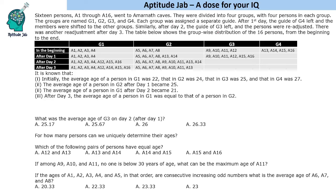After day 1, the guide of G4 left and its 4 members were shifted to other groups. Similarly, after day 2, G3 left and its people were readjusted in the remaining groups. There was another readjustment after day 3, so only 2 groups remain but with shuffling of people.